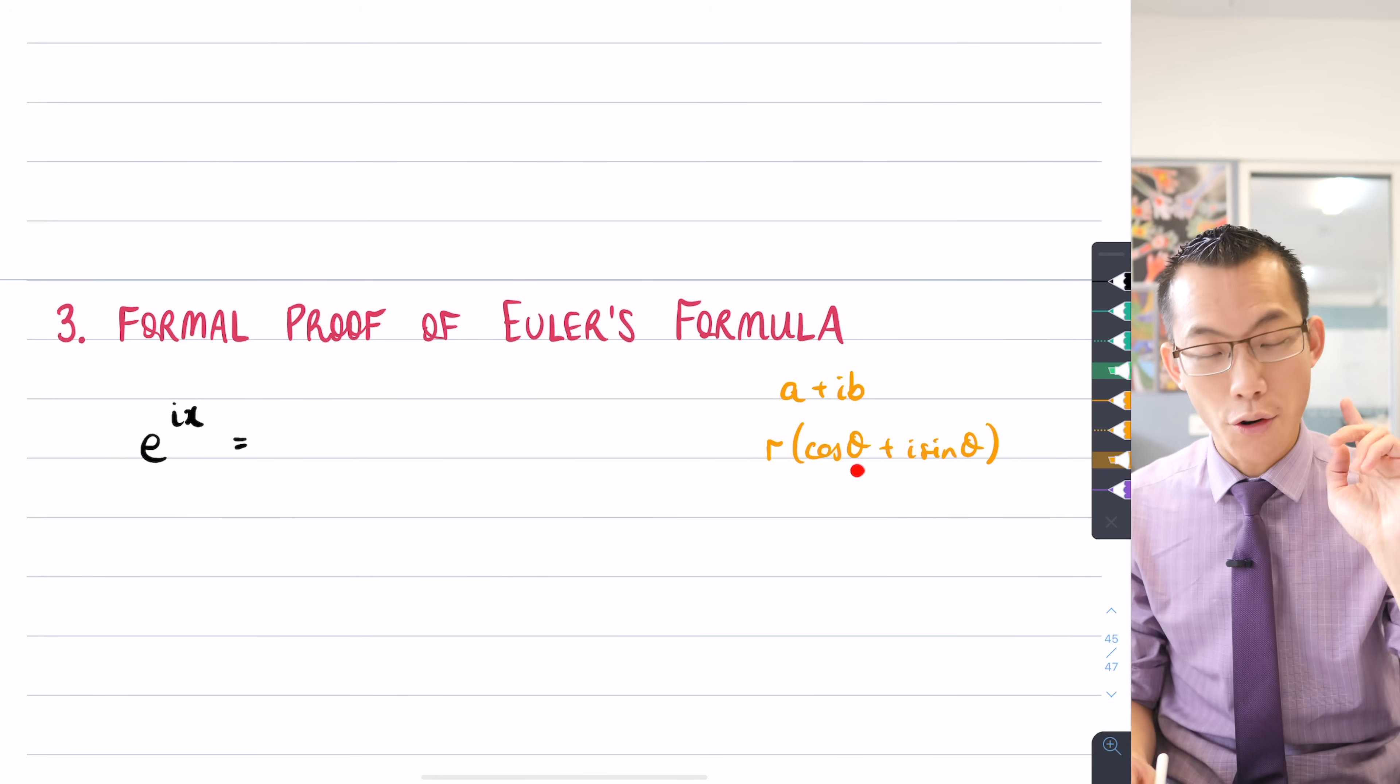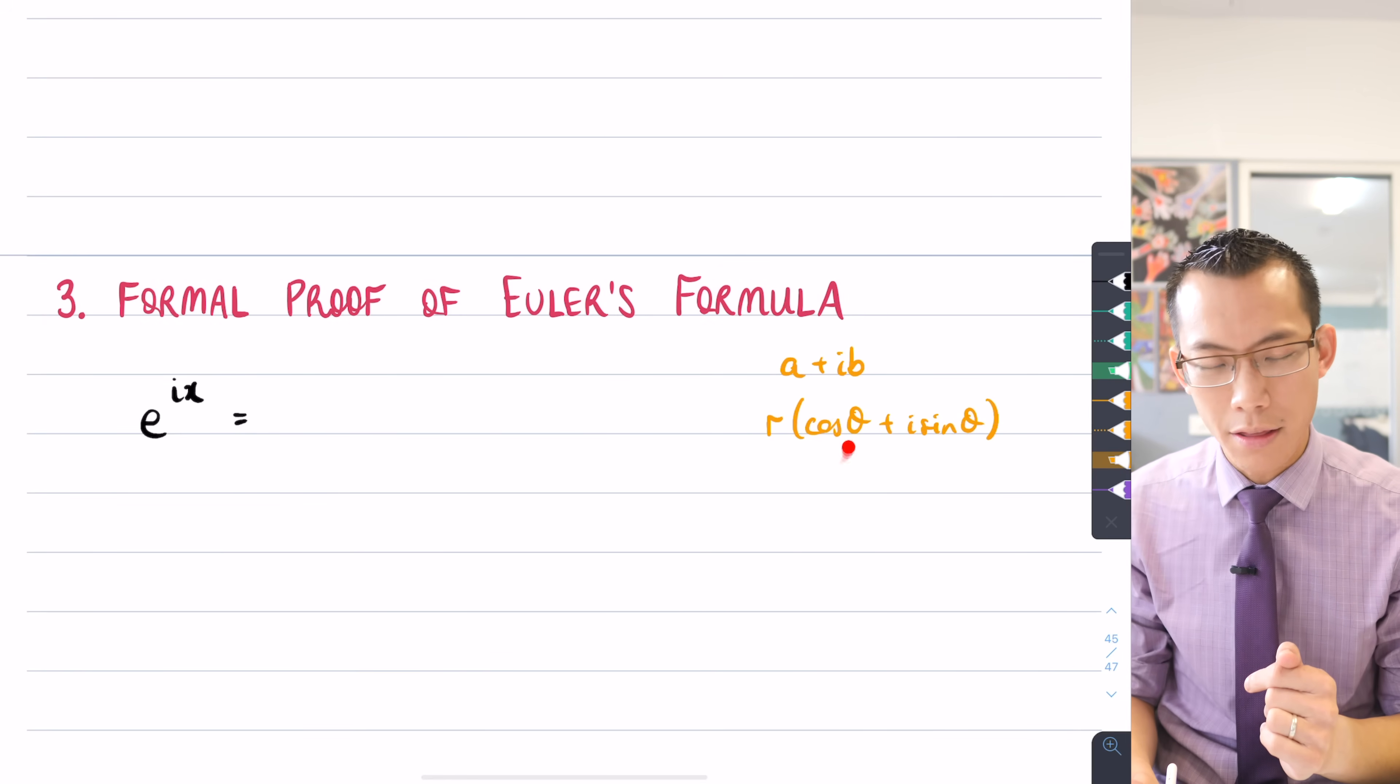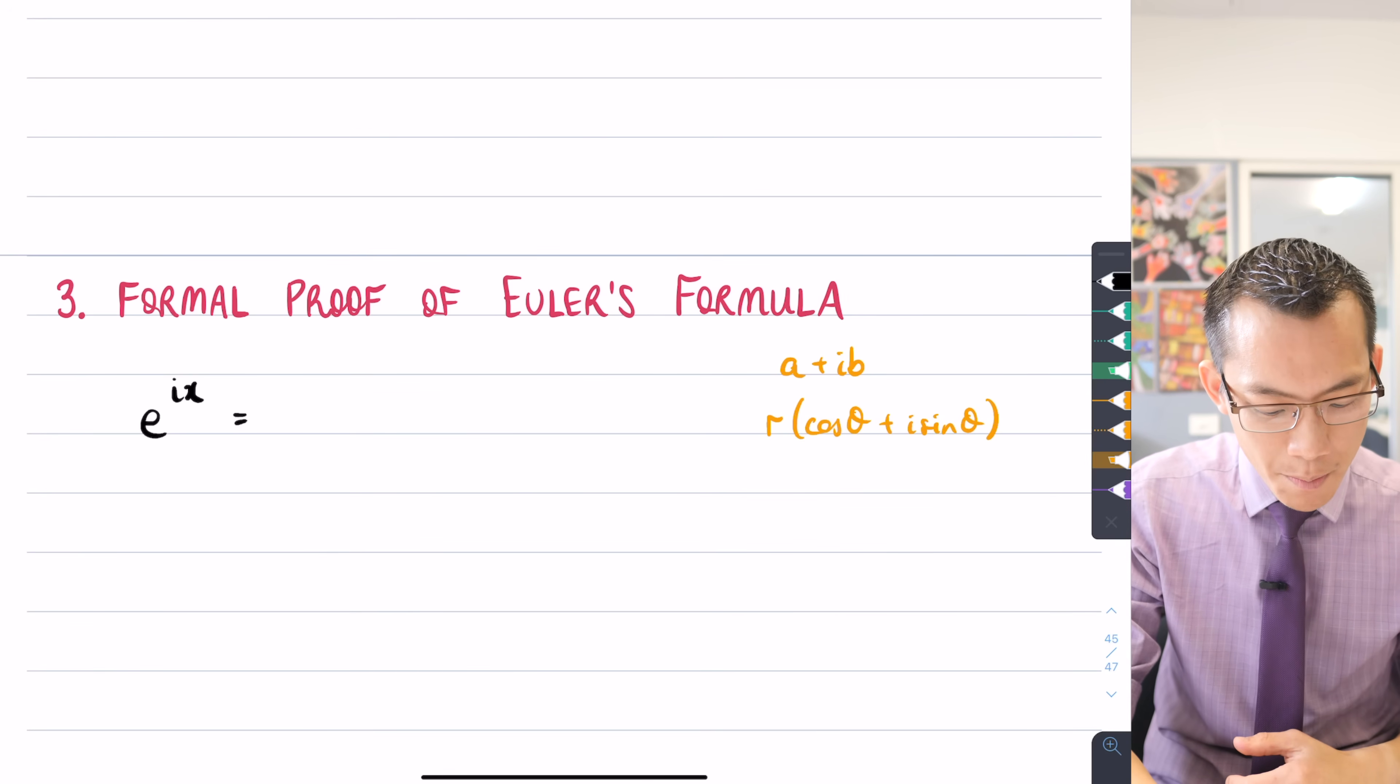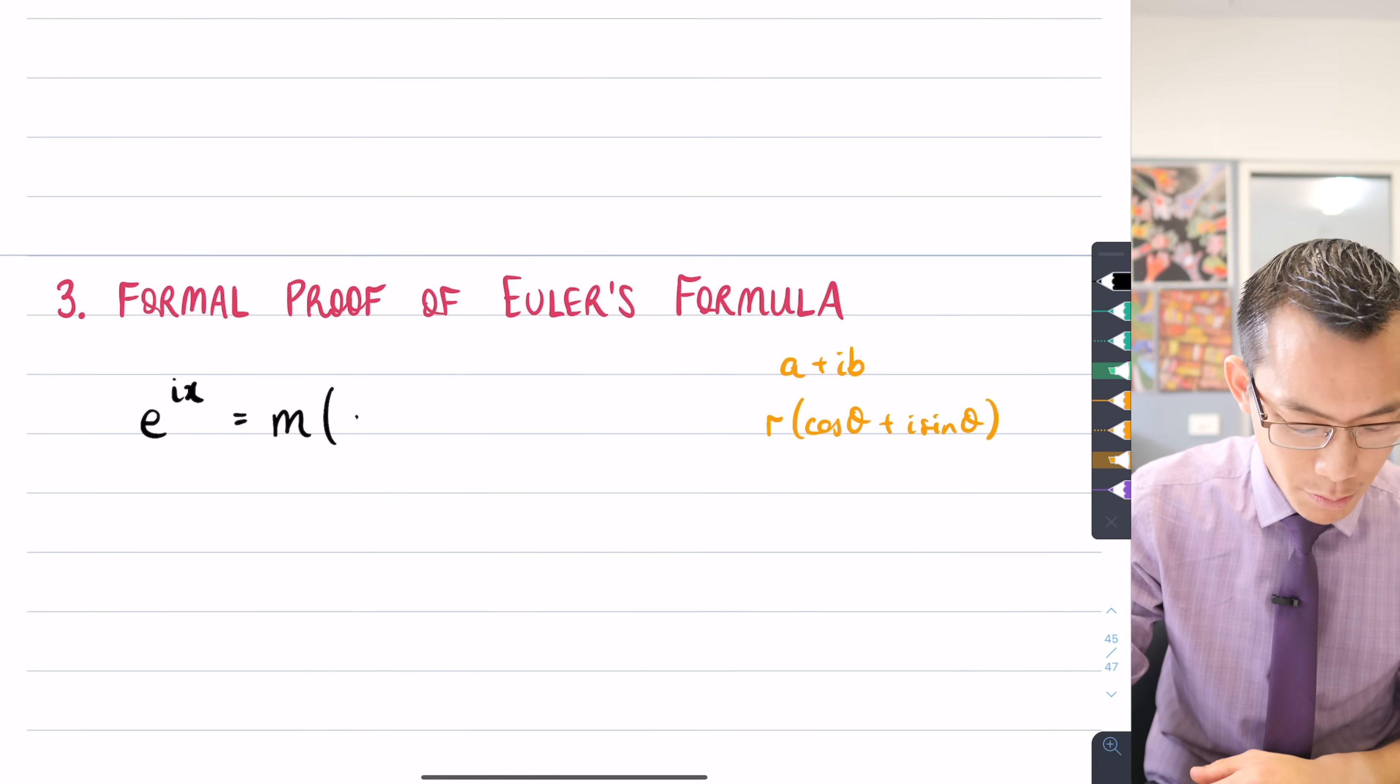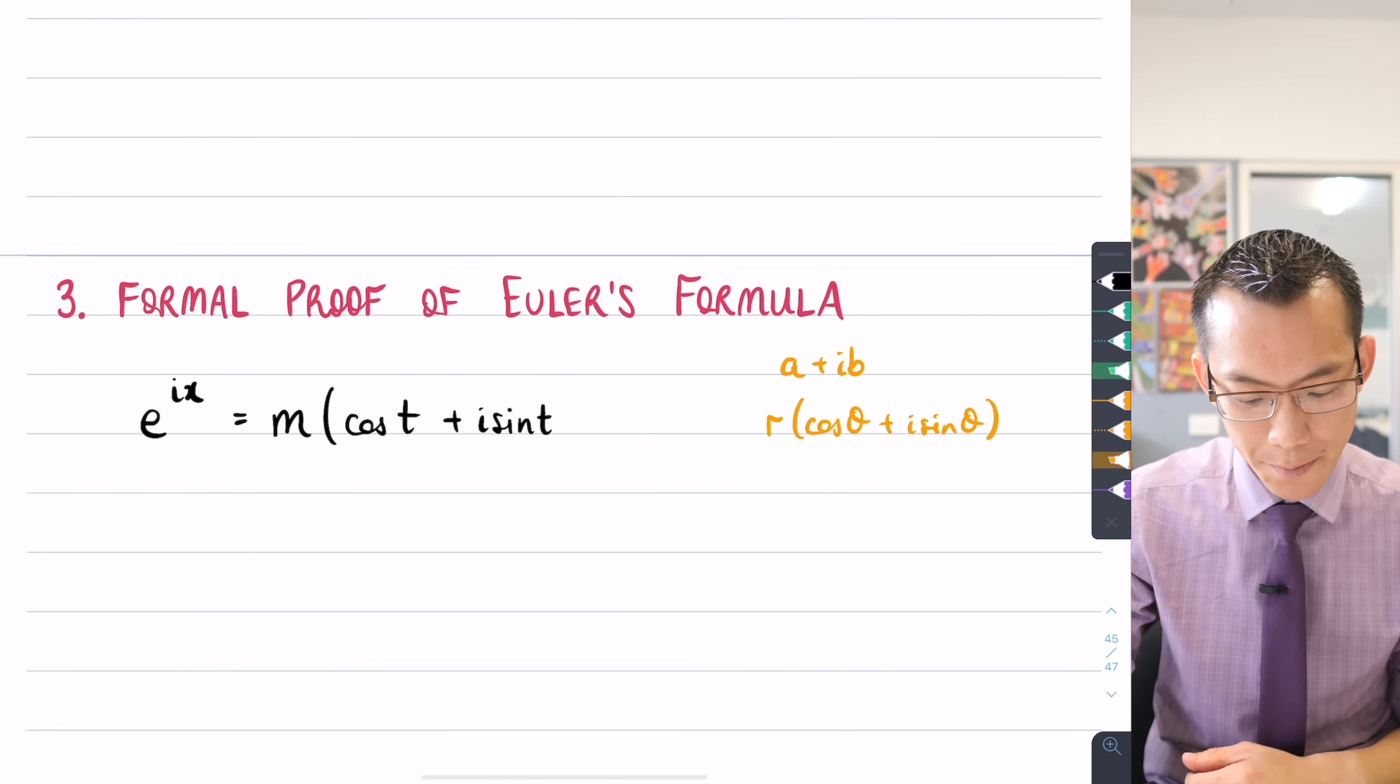So this thing here, I don't know what it's going to be equal to, but I know it's going to be some complex number. So I'm going to use this polar form, but I'm not going to write it exactly this way because this suggests I know what the r and theta are. I'm going to say it's some complex number with some modulus, so I'm going to use the letter m, and some other argument.